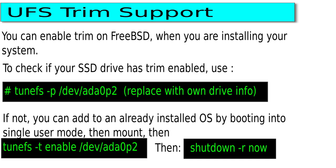You can enable Trim on FreeBSD when installing your system, and to check if your SSD drive has Trim enabled, issue the command shown on screen. If not, you can add it to an already installed FreeBSD system by booting into Single User Mode, then mounting, then issuing the TuneFS command shown on screen. Most importantly, don't reboot using the normal reboot command or halt — you must type 'shutdown -r now'.